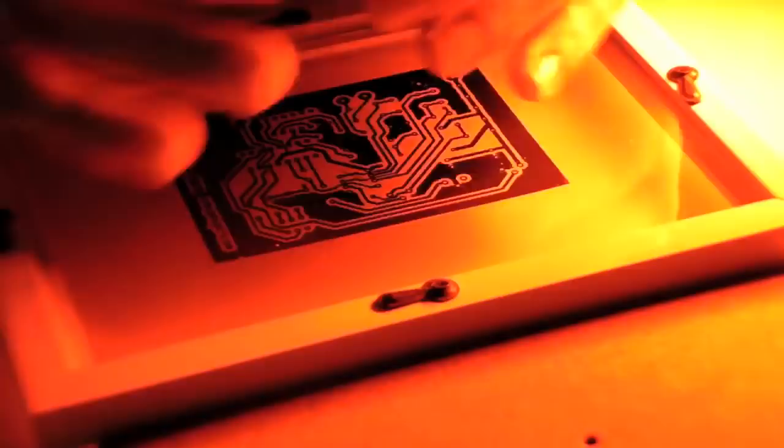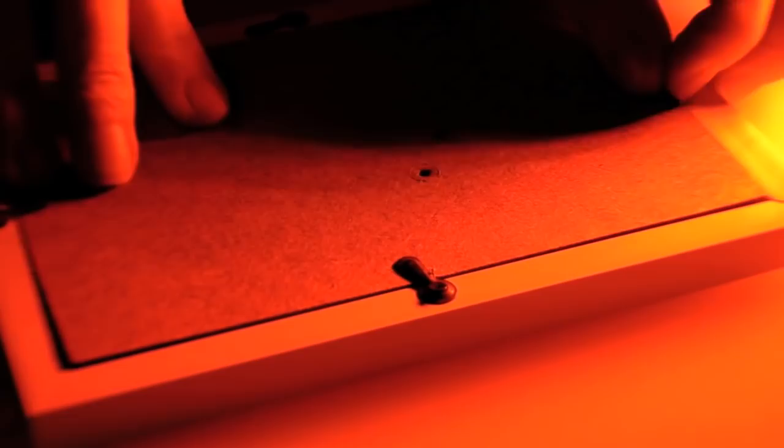Peel off the protective film, making sure you don't get any dust or scratches on the board surface. Place the sensitized side against the transparency, keeping it centered, and replace the frame's backing.